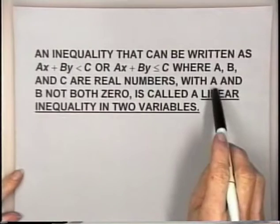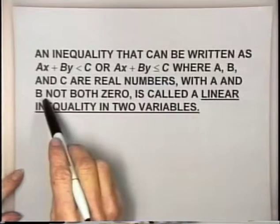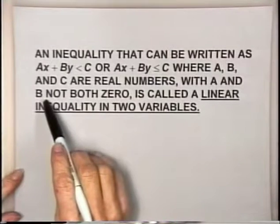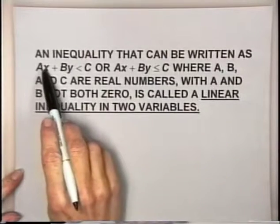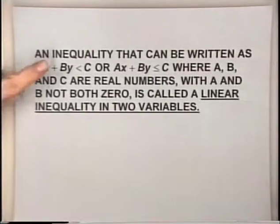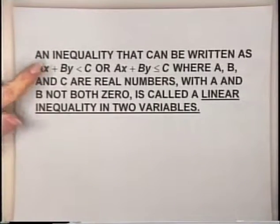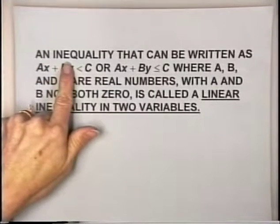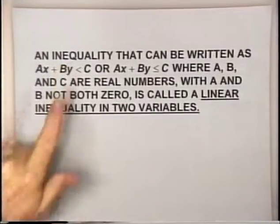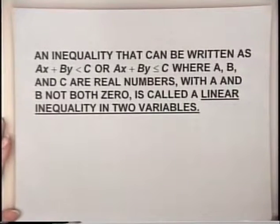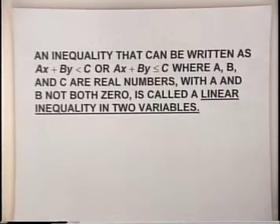Recall that a and b cannot both be zero, though one of them could be. So I might have just by is less than c, or just ax is less than c, and still have a linear inequality.